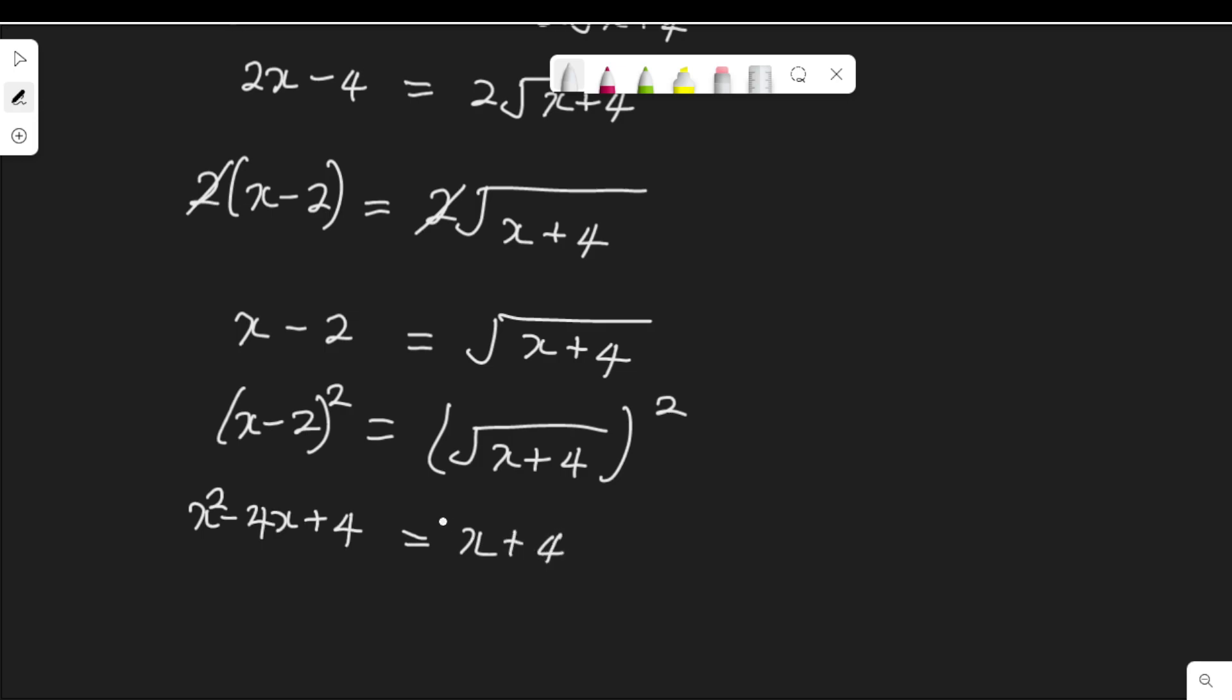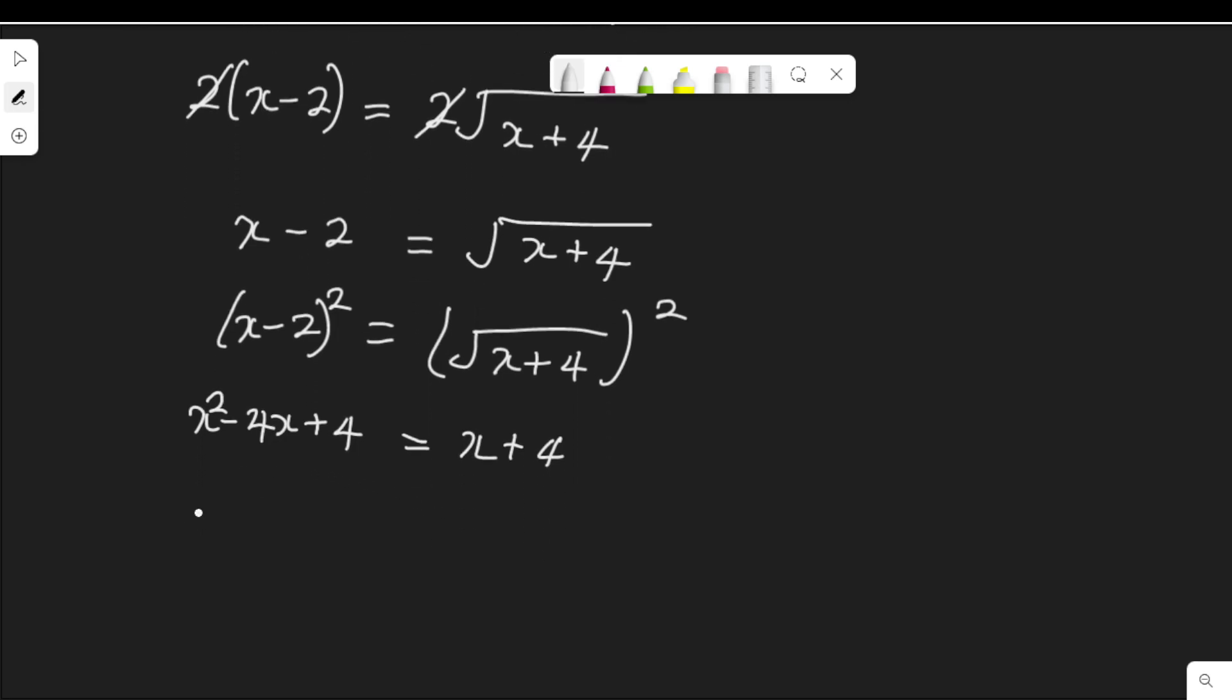This is leading us to a quadratic equation. So I have x² - 4x + 4, taking this 4 to the other side minus 4, and this x, let me subtract it here minus x.